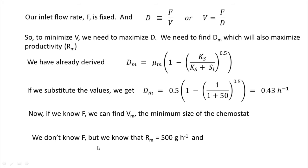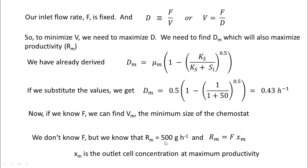We do not know F, but we know that the productivity is 500 g/hr. From this we will have to somehow find F and thereby find the minimum value of the reactor volume. We also know that Rm = F × Xm, where Xm is the outlet cell concentration at maximum productivity. We need Vm; we know Rm; so we are trying to find F and therefore Vm by using Rm.